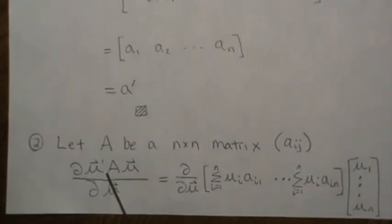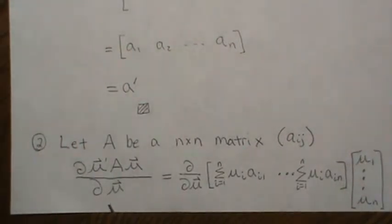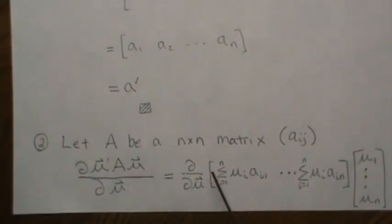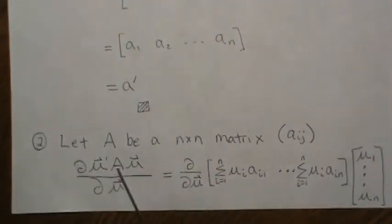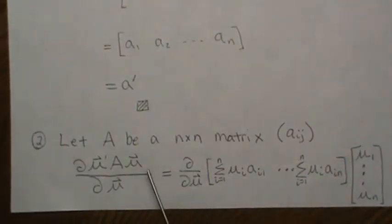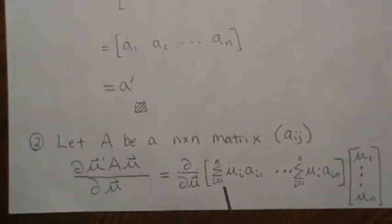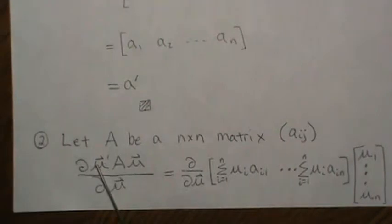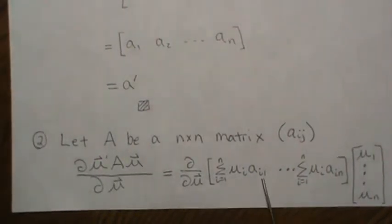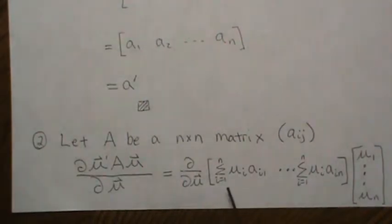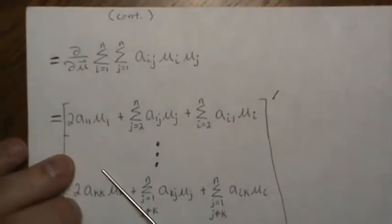Next, let's take the partial of μ'Aμ with respect to the vector μ, where A is an n×n matrix with elements a_ij. I want to multiply this out: the first part takes μ' times the first column for the first component, μ' times the second column for the second entry, and μ' times the nth column for the last entry. This is a 1×n matrix times an n×1 matrix. Multiplying through, we get the double sum of a_ij μ_i μ_j.